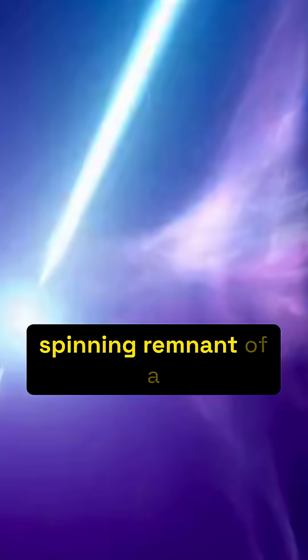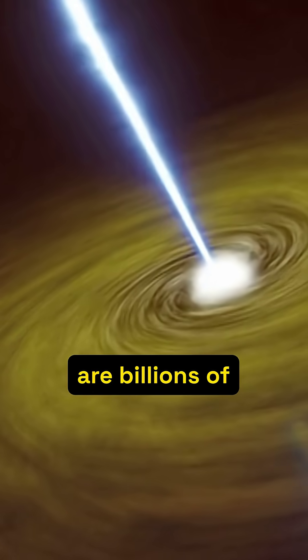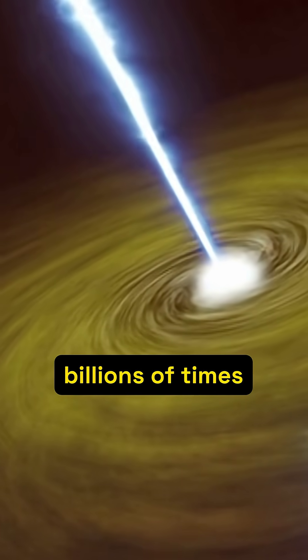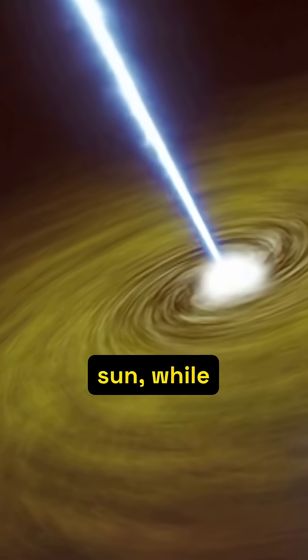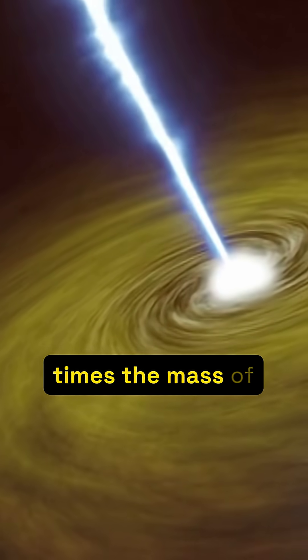A pulsar is a tiny, dense, rapidly spinning remnant of a single star. It's a stellar phenomenon. Quasars are billions of light years away and billions of times more massive than our Sun, while pulsars are typically within our galaxy and only a few times the mass of our Sun.